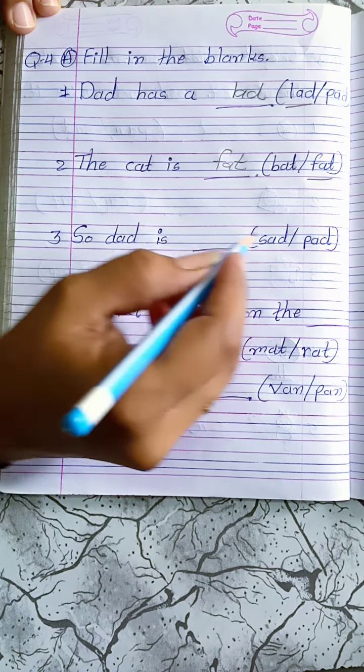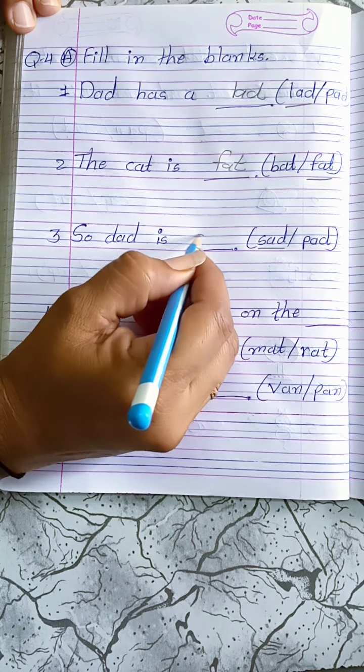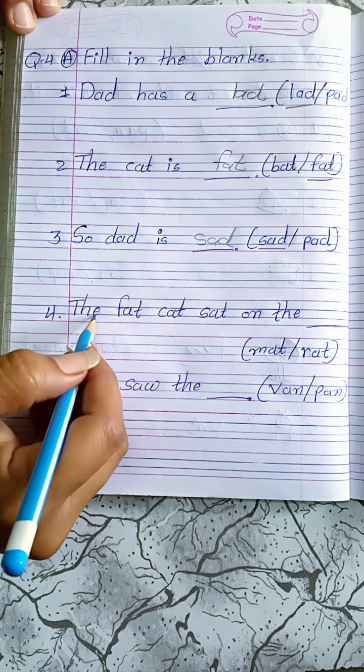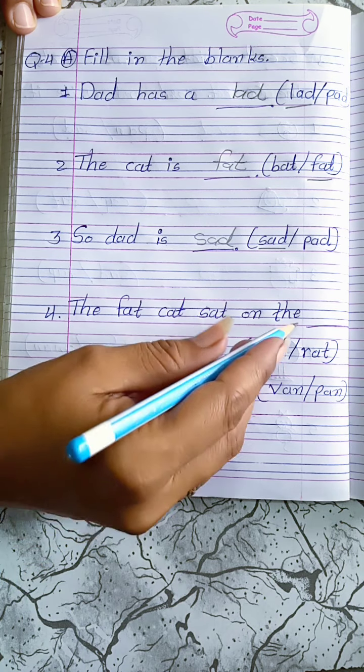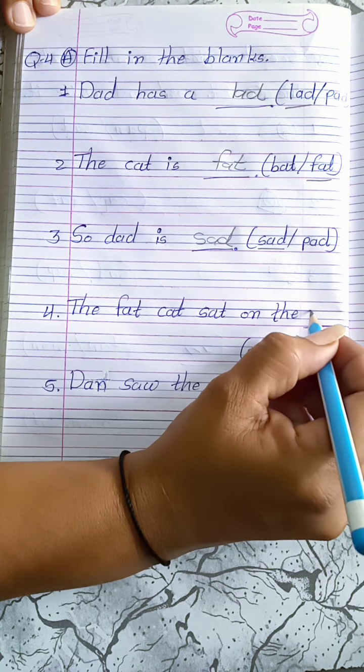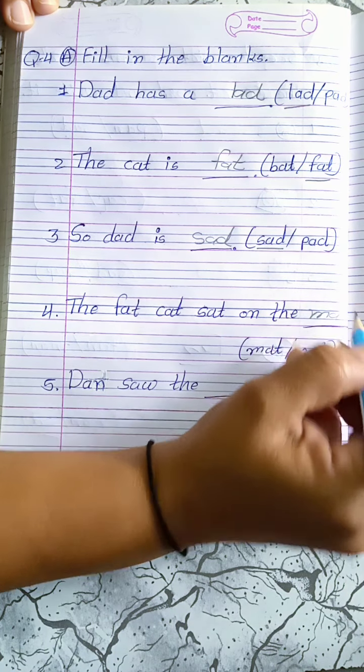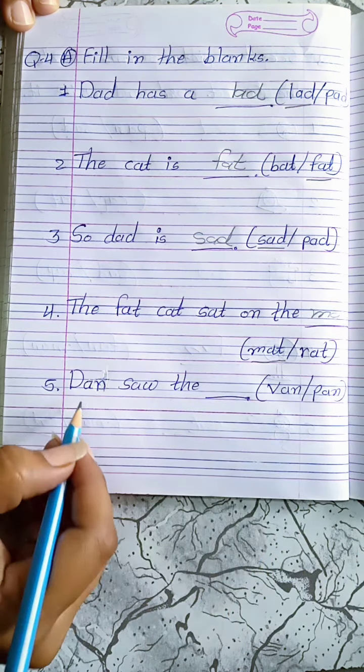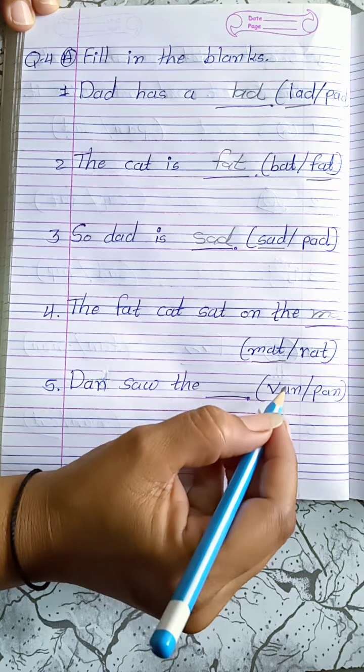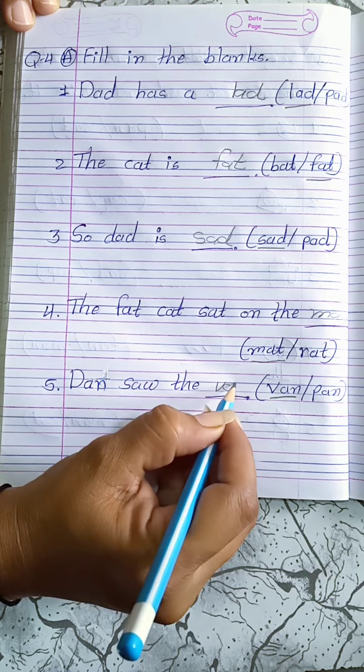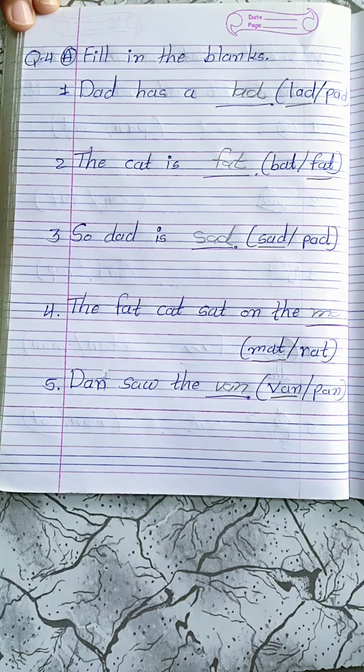Dad is sad: S-A-D, sad. The cat sat on the mat: M-A-T, mat. The van: V-A-N, van. Take next page.